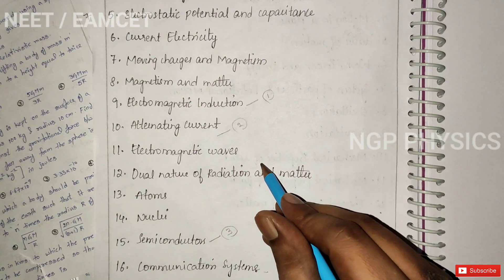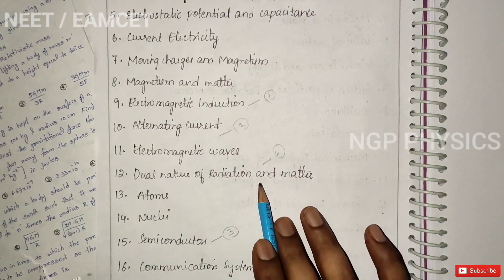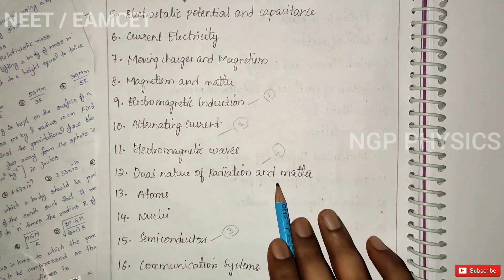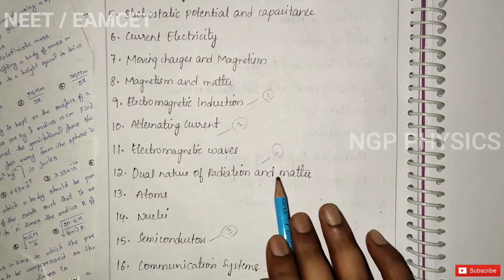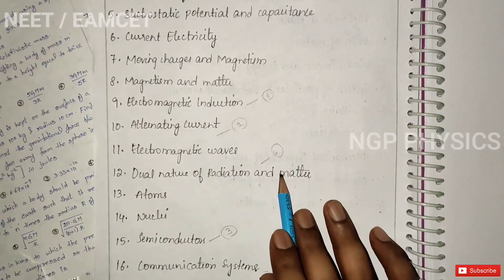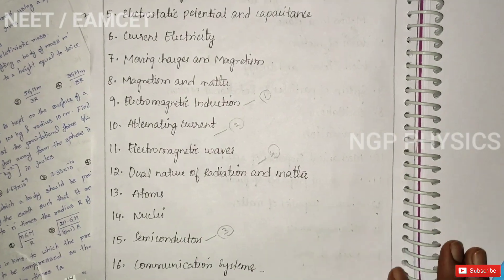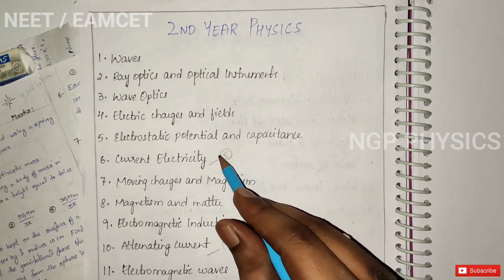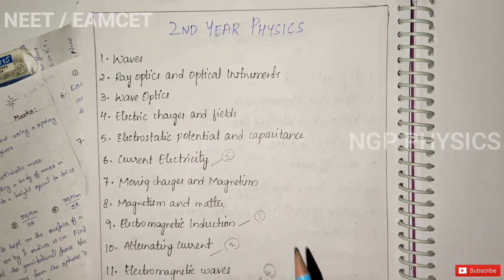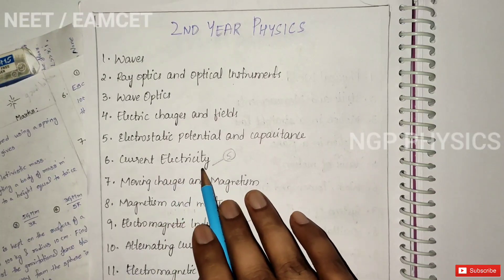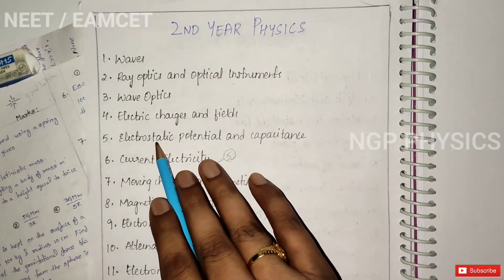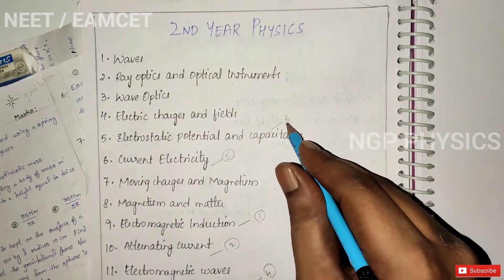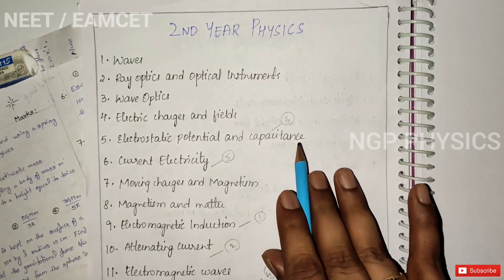The fourth priority is Dual Nature of Matter. Sometimes you get two bits from this topic every year, including the Photoelectric Effect. This is the fourth priority. The fifth priority is the Electricity topic — covering Electric Potential, Capacitors, and Grouping of Resistors. Potentials and Capacitors are the most important topics in this section.